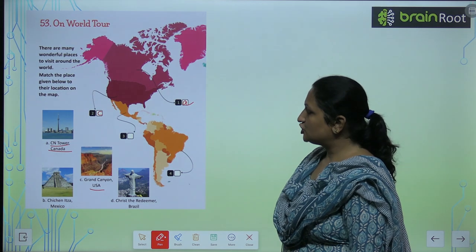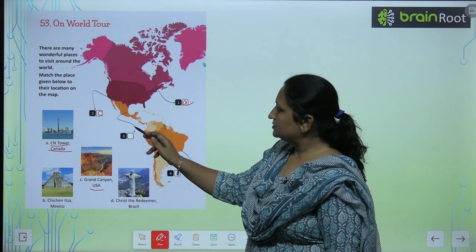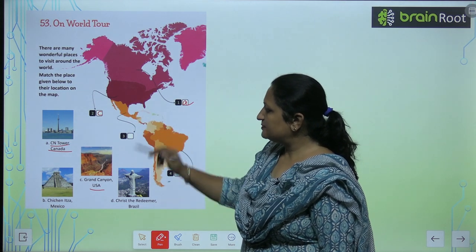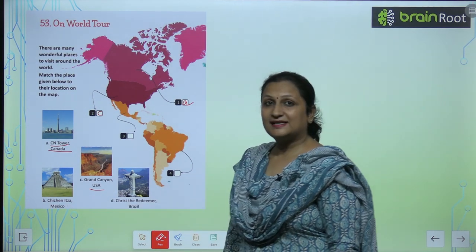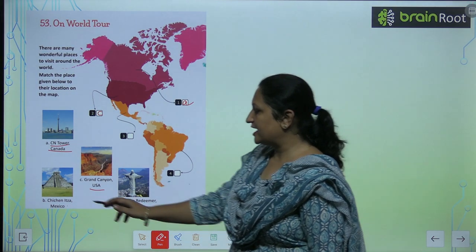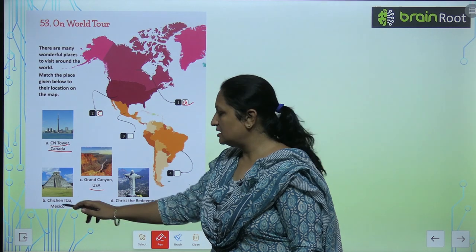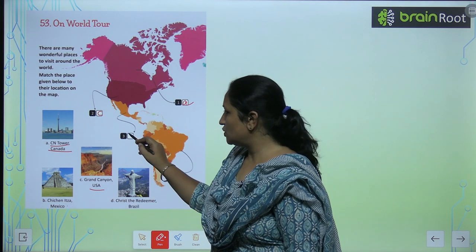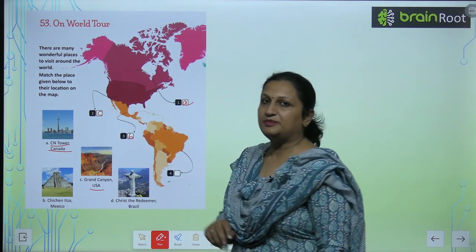Then children, first see this part. This part belongs to Mexico. So here will come Chichen Itza, Mexico. So you will write B here.